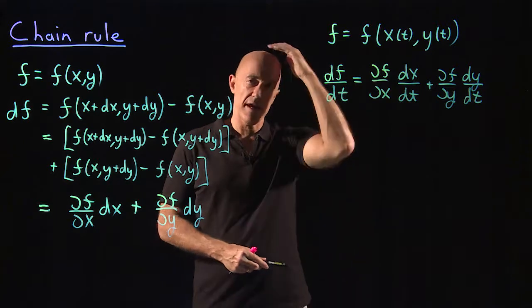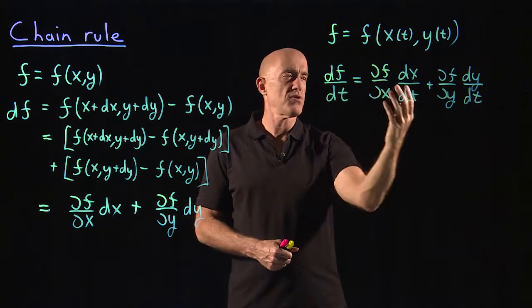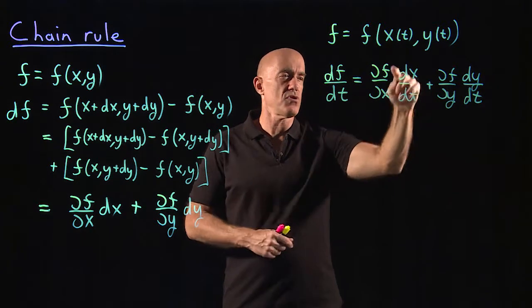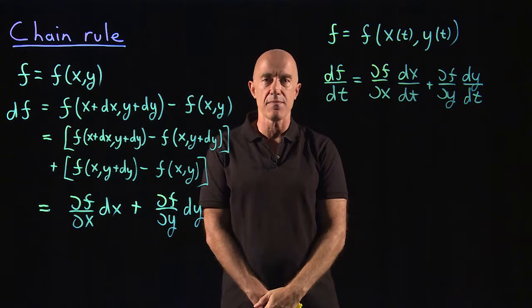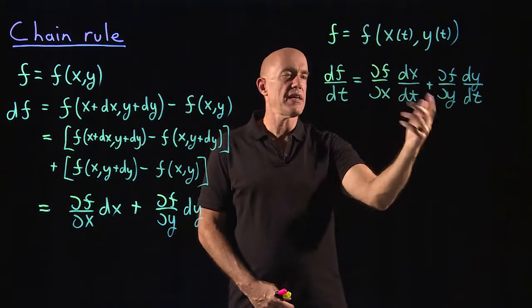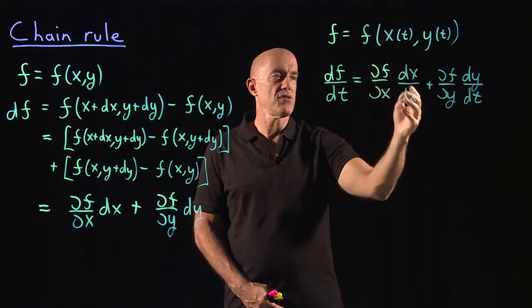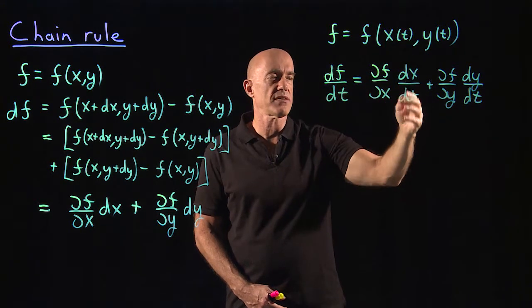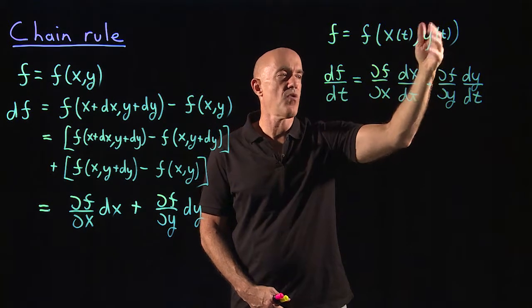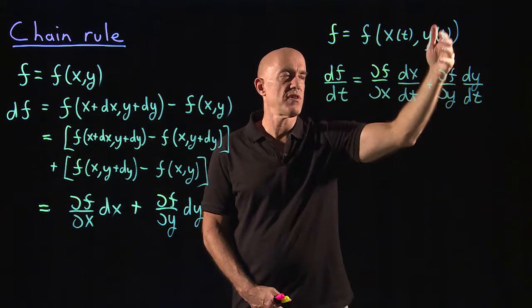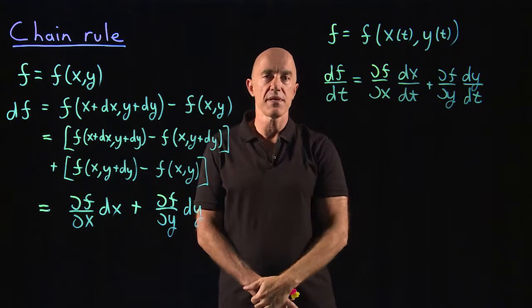It's a little bit different than for normal regular derivatives — you have two terms. Usually for a chain rule you like to think about canceling the numerator and the denominator, but you can't do that here. You have to first differentiate f with respect to x and then take the derivative of x with respect to time, and then add that to differentiating f with respect to y and taking the derivative of y with respect to time.